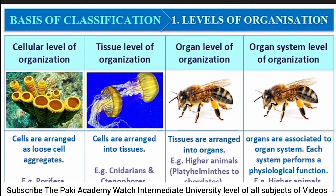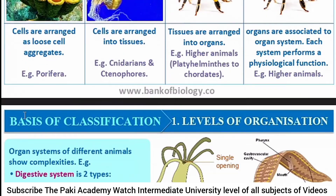At the tissue level of organization, cells are arranged into tissues, as seen in Cnidaria and Ctenophora. At the organ level of organization, tissues are arranged into organs, as in Platyhelminthes. At the organ system level of organization, organs work together in systems, each performing a physiological function. Higher animals like humans are examples of this.